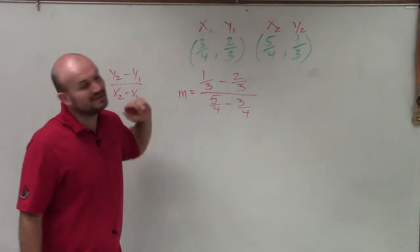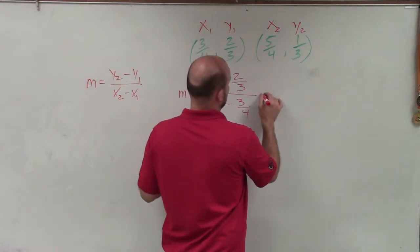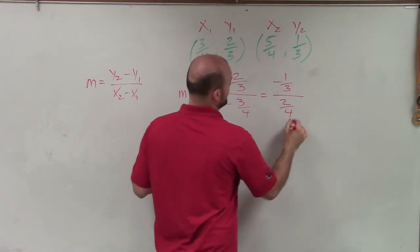But now, fortunately for us, we have the exact same denominator, so I'm just going to subtract across. And here what I have is a negative 1 third divided by 2 fourths.